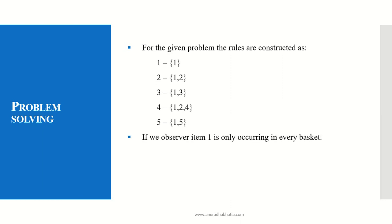These are a few examples of the subset that we can create. If we observe, item 1 is only occurring in every basket. To have 100% confidence, the item has to appear in every basket which is item 1 only if we consider the example or consideration that we have taken here.